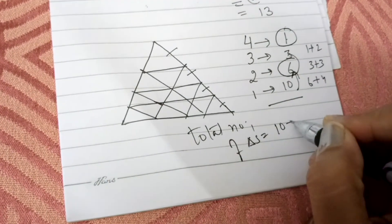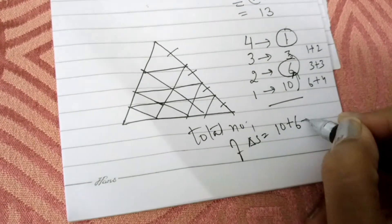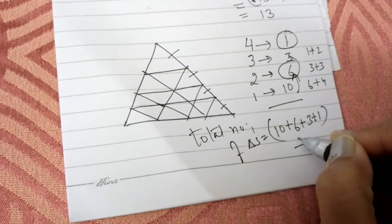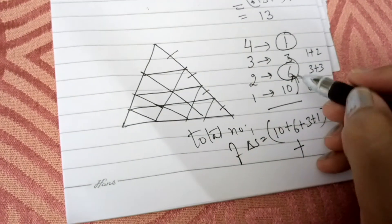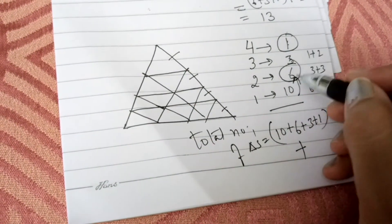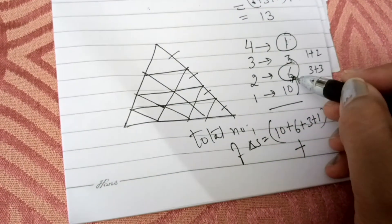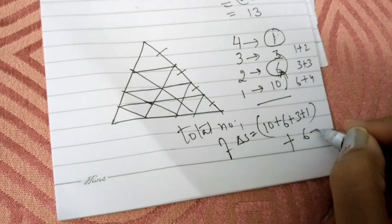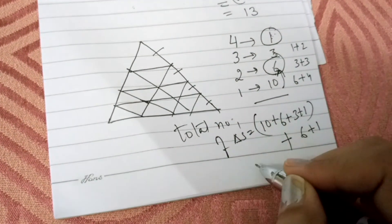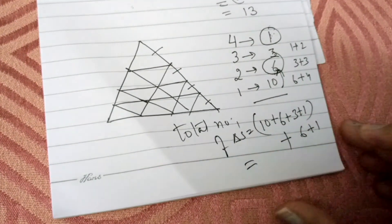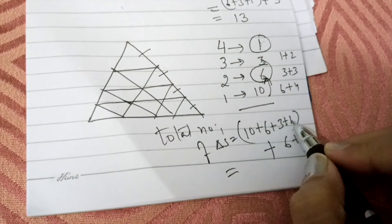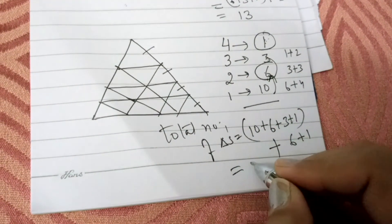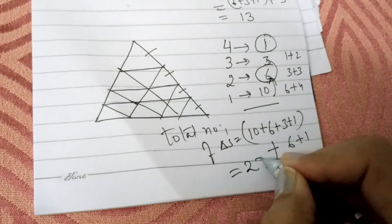The total number of triangles will be 10 plus 6 plus 3 plus 1, plus the numbers on which we have put the circles, which is 6 plus 1. So the total answer is 20 plus 7, that is 27.